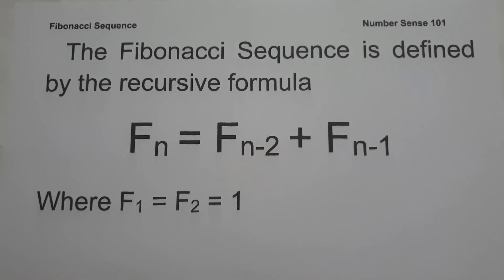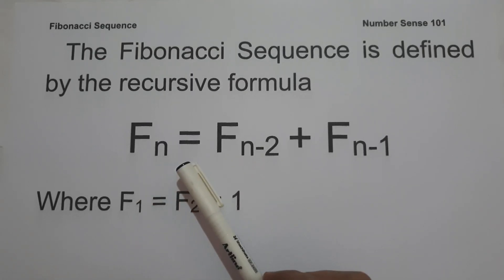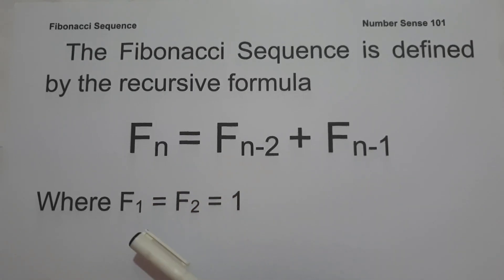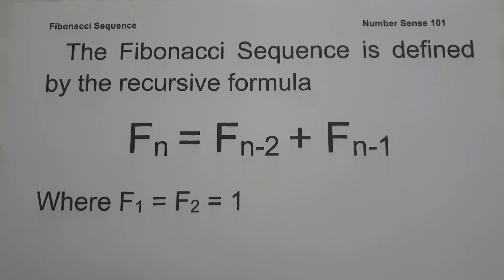For today's video, let us talk about what is the Fibonacci sequence. The Fibonacci sequence is defined by the recursive formula f(n) = f(n-2) + f(n-1), where f(1) and f(2) are equal to 1. A recursive formula is an expression used to determine the nth term of a sequence using the terms that precede it.